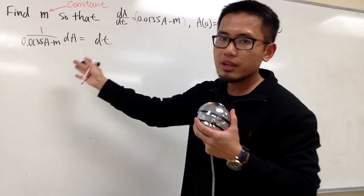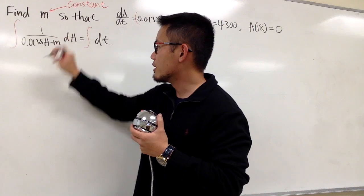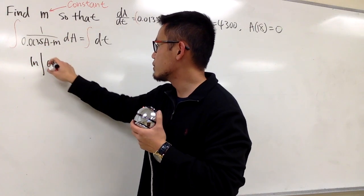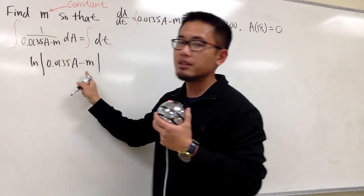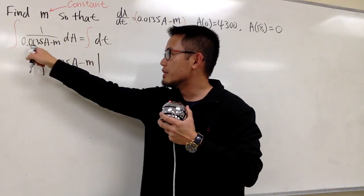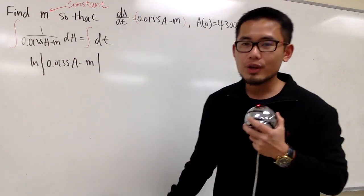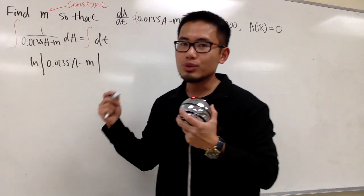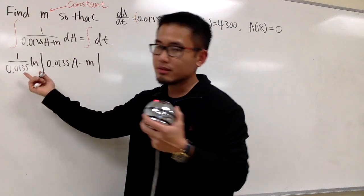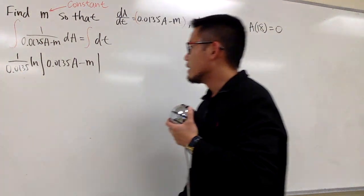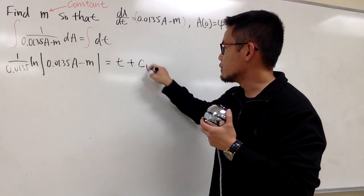From here, we can integrate, and we will see that the left side gives us ln of the absolute value of (0.0135A minus M), because this is just linear. However, the derivative of 0.0135A minus M is 0.0135, so when we do the integral, be sure to divide by that derivative — multiply by 1 over 0.0135. On the right-hand side, we just get t plus c1.